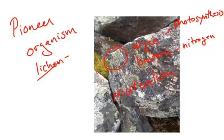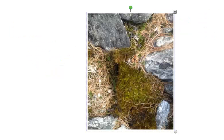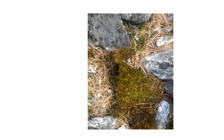As the lichens grow and die, and as they decompose, they provide just a small amount of soil for some slightly larger organisms, like this moss. This moss is growing on areas where lichen had previously grown.